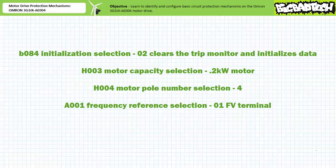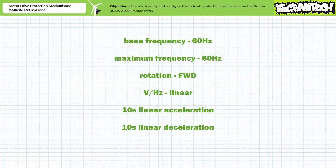Finally, we'll program the drive to recognize an external speed potentiometer input using extended function parameter A001. This start state establishes a 60 Hz base frequency, a 60 Hz maximum frequency, forward default rotation, a linear volts per hertz ratio, a 10 second linear acceleration time, and a 10 second linear deceleration time, among other properties. This motor drive is now ready for today's activities.